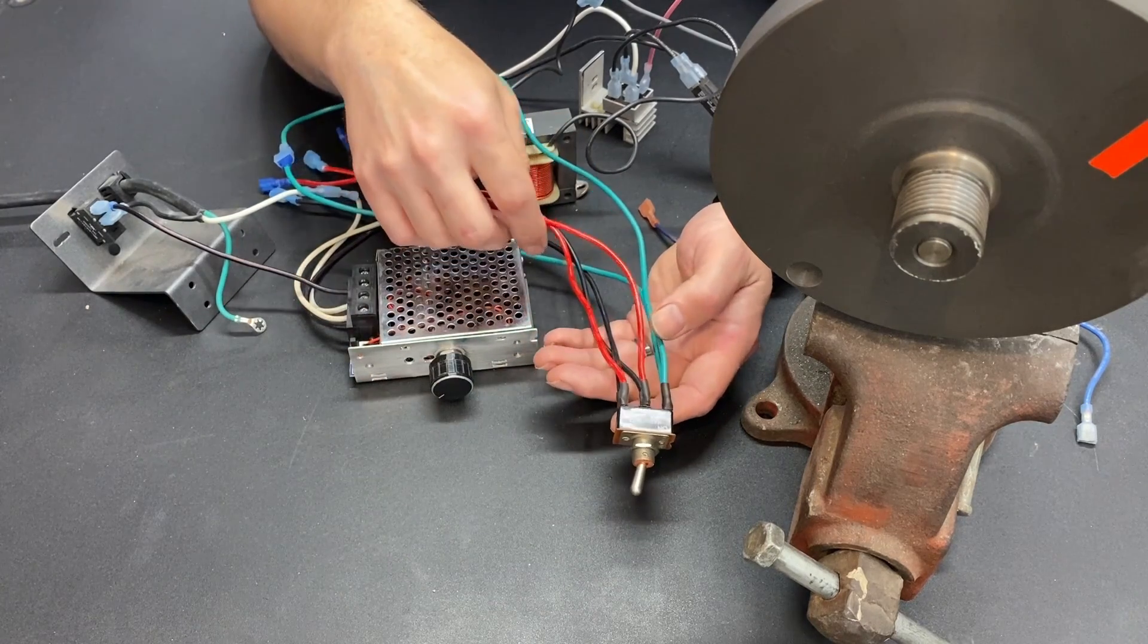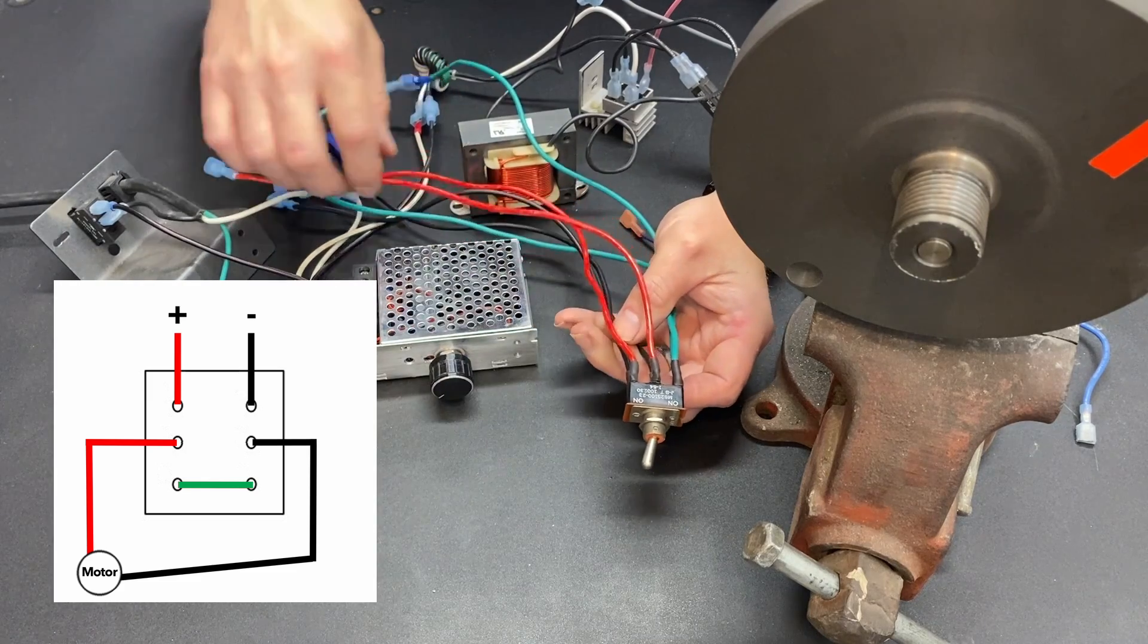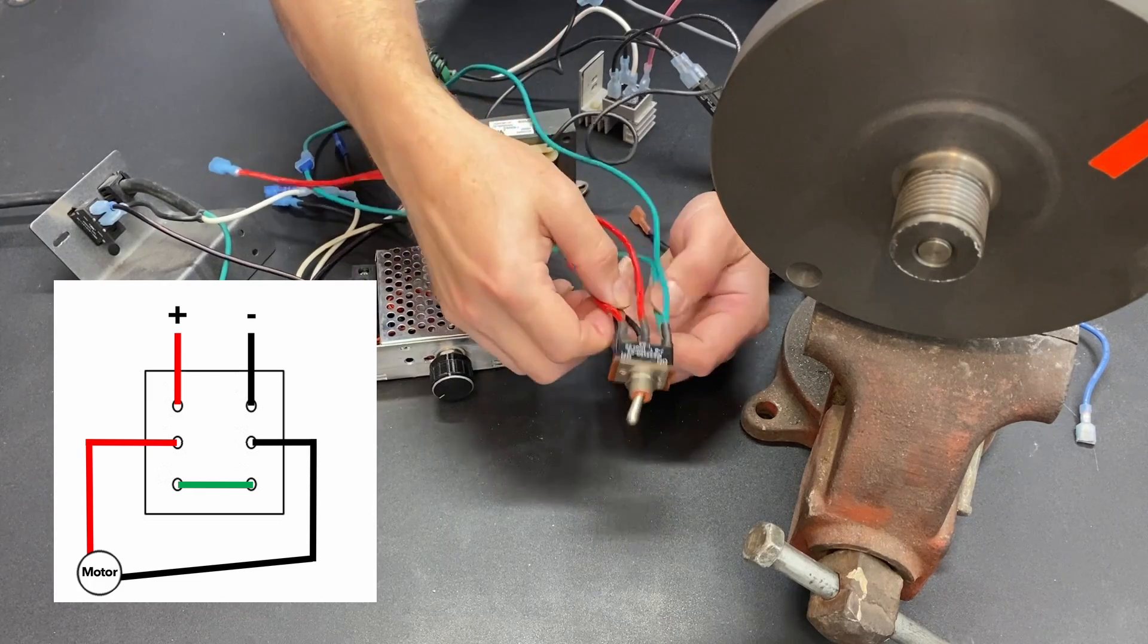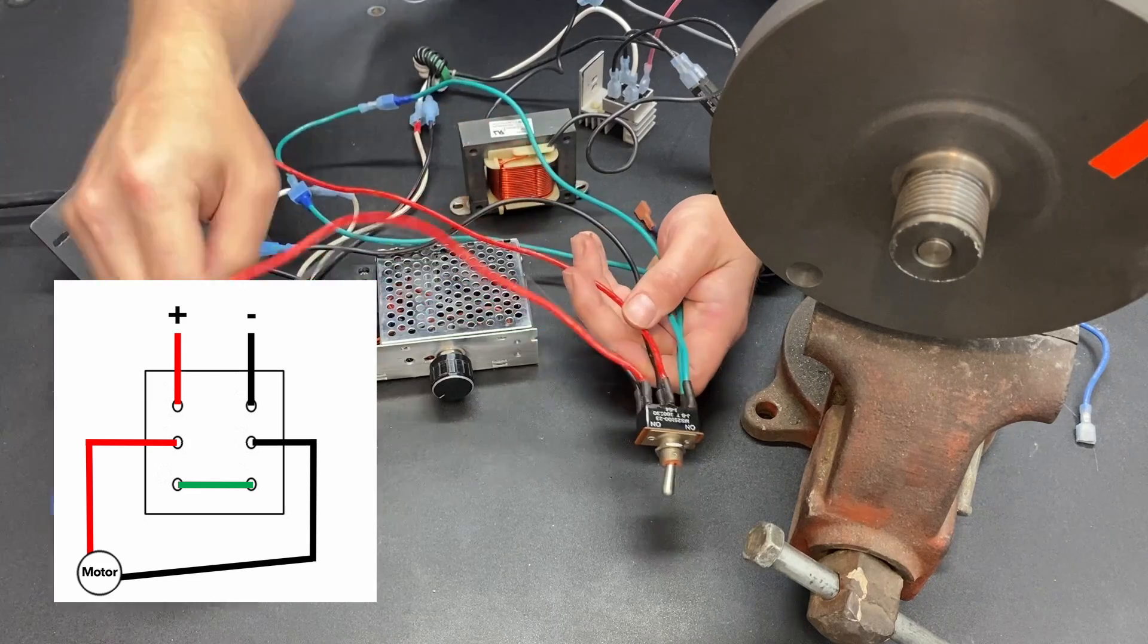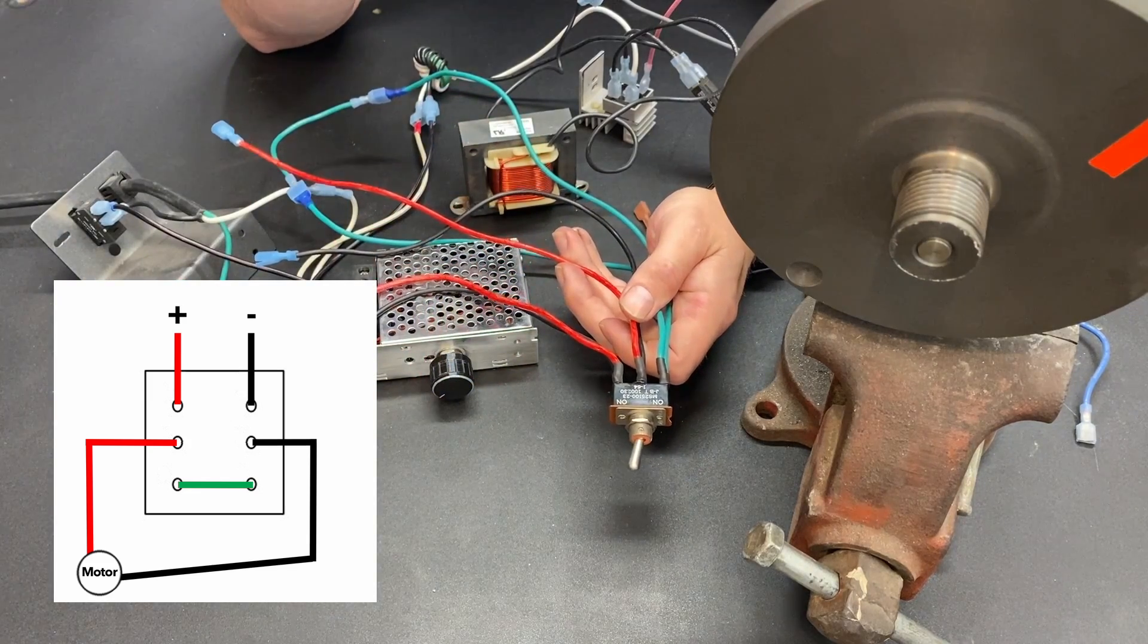So the way I have this wired, if we take these two center terminals, black and red, and we hook them up to the motor. And then we take these two outside terminals, black and red, and we hook them up to the power supply.